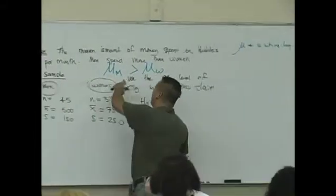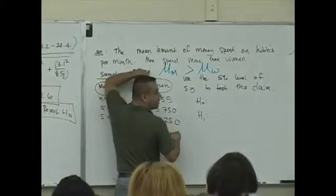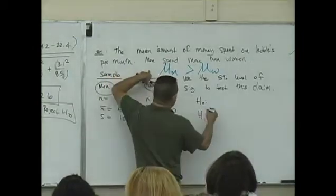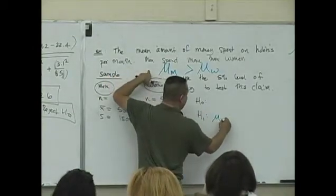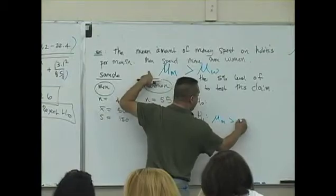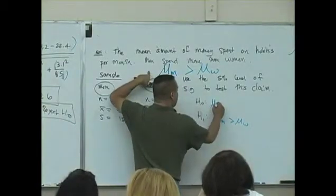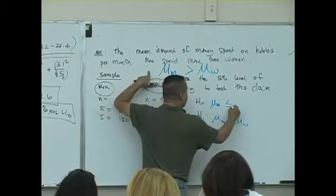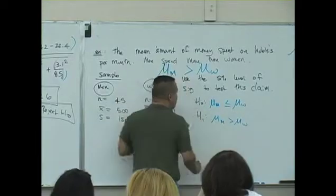This is mu. Okay? That's a mu. So, is that a null or alternate hypothesis? That's an alternate. So mu of men greater than mu of women. Mu of men less than or equal to mu of women. This is your hypothesis.